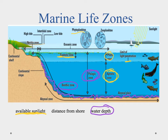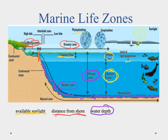The final way we categorize marine zones is by distance from shore. Going back to the continental margin: at the end of the continental shelf, where the continental slope begins, that starts the oceanic zone. Above the continental shelf we call this the neritic zone. There's also the intertidal zone right on the shoreline — that's the distance between high tide and low tide.